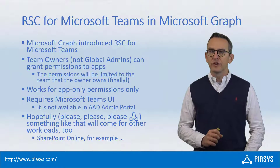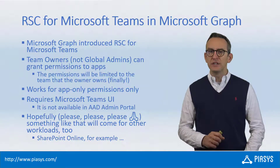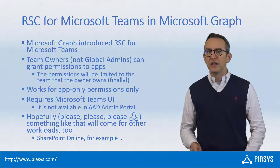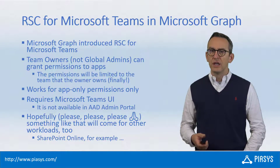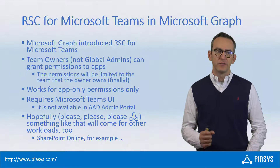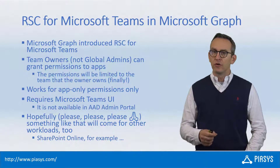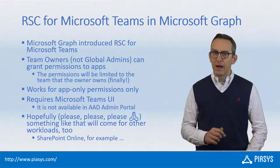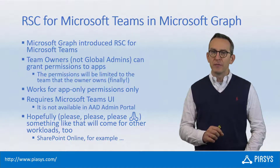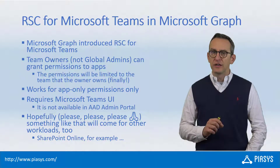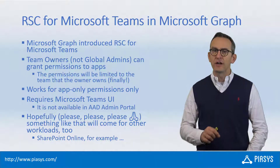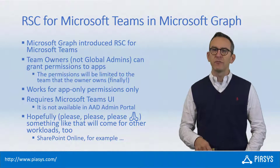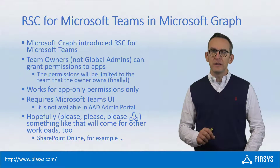Microsoft recently introduced the resource-specific consent capability in Microsoft Graph, which allows us to grant resource-specific consent permissions in Microsoft 365 for Microsoft Teams. Specifically, a team owner — so not anymore a tenant global administrator — can grant permissions to an app, and the app will be granted permissions to access the resources in the team that the owner owns. So we don't need a global tenant administrator anymore, and the grant will be for a specific resource: the team that the owner owns.